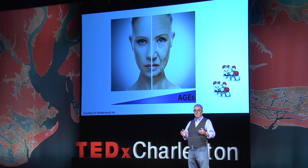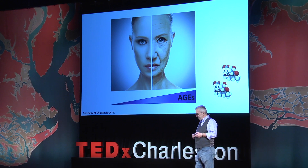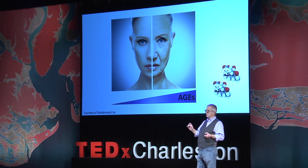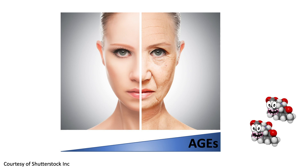One of the prime examples of the damage that AGEs can do is wrinkles in the skin. AGEs can bind to the proteins in the skin, which dries the skin out and promotes wrinkles. If you imagine the same thing happening to all of your organs and all of the tissues in your body, that gives you a sense of what AGEs can do to you — but it's not the only thing.